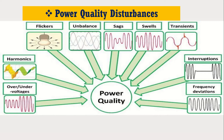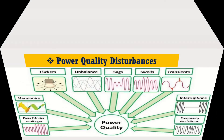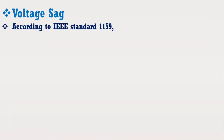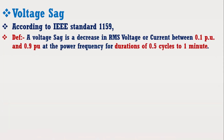Power quality research is the study of various phenomena that cause power quality disturbances to occur and the development of mitigation strategy. According to IEEE standard 1159, a voltage sag is a decrease in RMS voltage or current between 0.1 and 0.9 per unit at the power frequency for durations of 0.5 cycle to 1 minute.